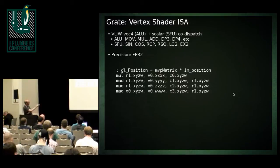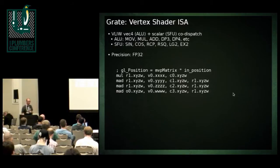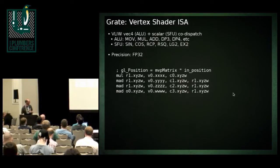As an example, a matrix multiply — which is a multiply plus three multiply-adds — gives a feel for what the hardware looks like from the shader point of view.